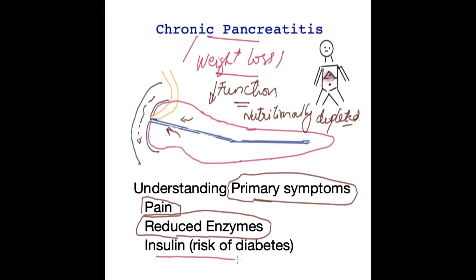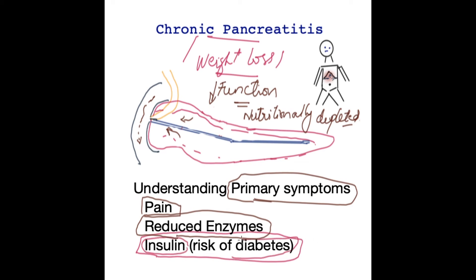These patients are at risk of developing diabetes because of the loss of function within the pancreas. Due to atrophy, the pancreas becomes smaller, there is more fibrosis or scar tissue, and hence not enough insulin is being produced. This increases the risk of the patient developing long-term diabetes.